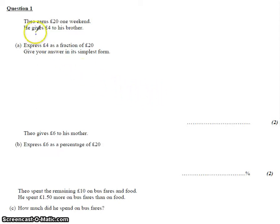OK, this is question one. It says Theo earned £20 one weekend. He gives £4 to his brother.